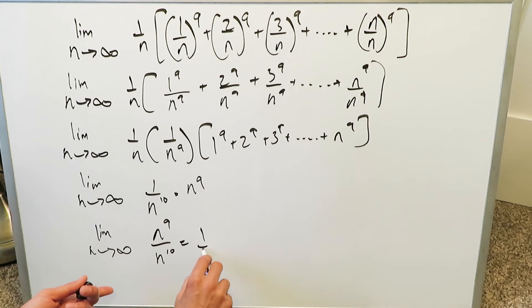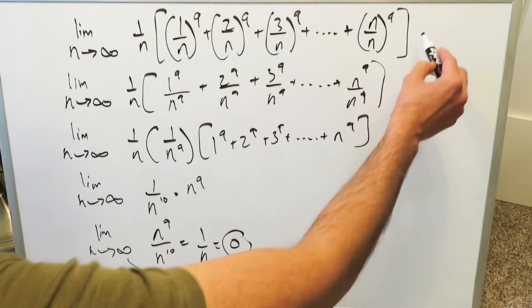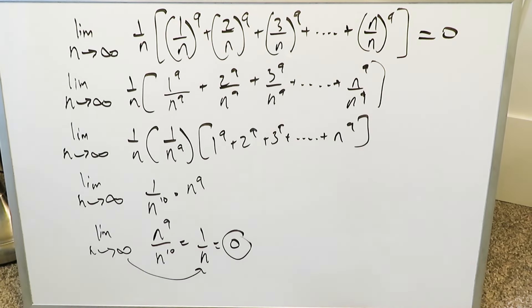Which is really 1 over n, which is really 1 over infinity. Infinity coming here and your answer here can be 0 and it would be right. That would be one way of doing it.